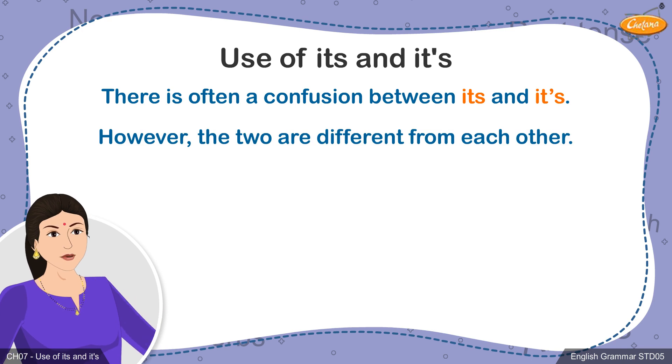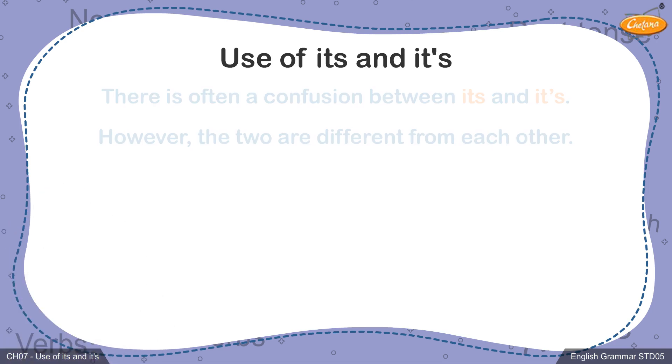We tend to incorrectly use these words in sentences, which completely changes the original meaning of the sentence. Hence, it is important to learn when, why, and how these two similar-sounding words need to be used. Let's have a look at the use of its. Read the following examples.